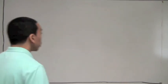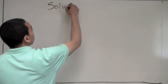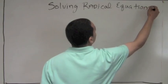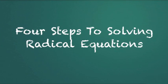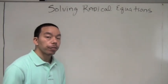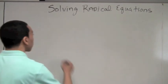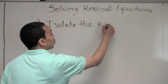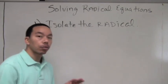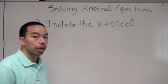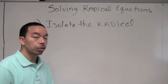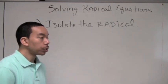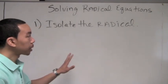Today we're going to solve radical equations. In solving radical equations, we first must understand the steps. Step one is to isolate the radical — we want to isolate that radical term on one side of the equal sign, getting rid of everything else, whether it's a variable term or a constant. If there's a coefficient in front of the radical, we divide everything by that coefficient to isolate the radical.